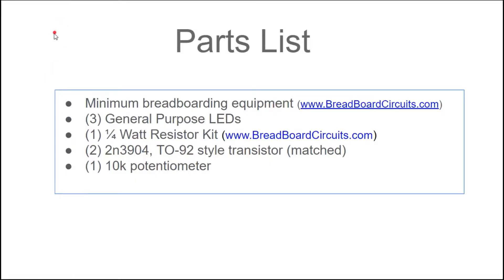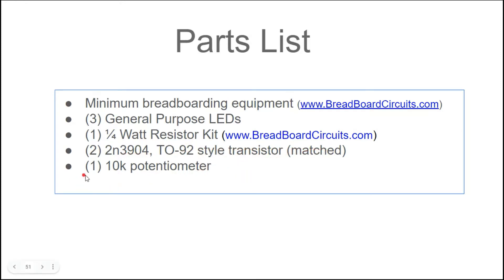If you want to build this circuit, I recommend having a minimum level of breadboarding equipment — you can find that list at breadboardcircuits.com — three general purpose LEDs, and a quarter-watt resistor kit also available at breadboardcircuits.com. For this particular circuit, you're going to need two 2N3904 transistors, which are very popular and readily available. The ones you need will need to be matched, meaning the gain of each transistor should be essentially the same. To determine that, you'll need a multimeter with the ability to test the beta of transistors. You will also need a 10K potentiometer.